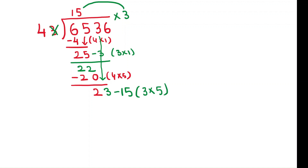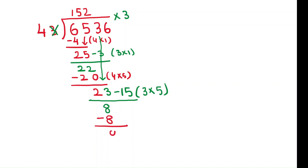So here, one time we are working with 4 and another time with 3 — we are repeating 4 and 3. When you are bringing down, you work with the last digit of the divisor. 23 minus 15 is 8. That is 8, and 8 minus 8 is 0.